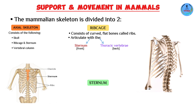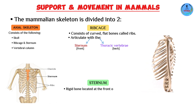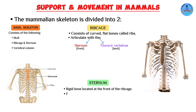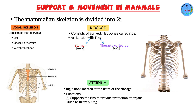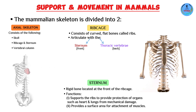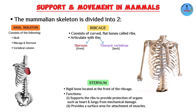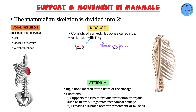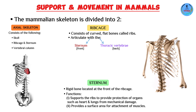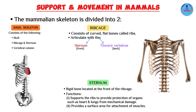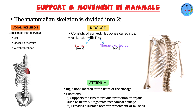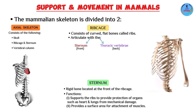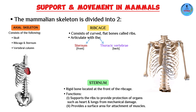The sternum is a very rigid structure commonly referred to as the breastbone. It has two main functions: number one, it supports the ribs because it articulates with them; and number two, it protects the organs found in the thoracic cavity — specifically the heart and lungs, which are vital to circulation and gaseous exchange — from mechanical damage.